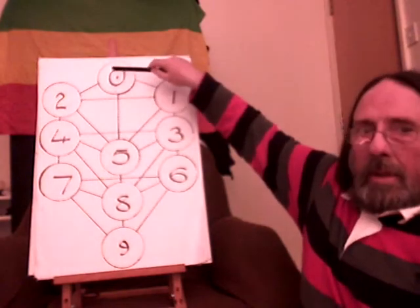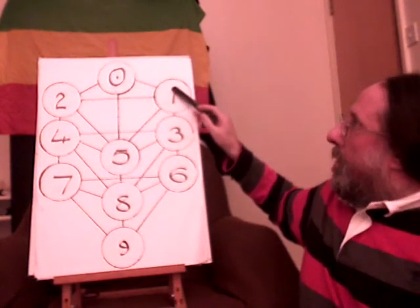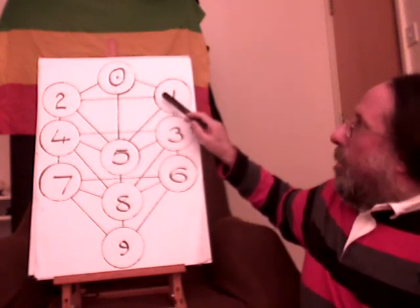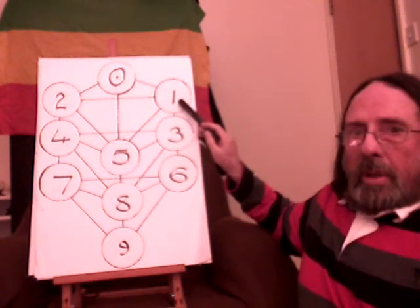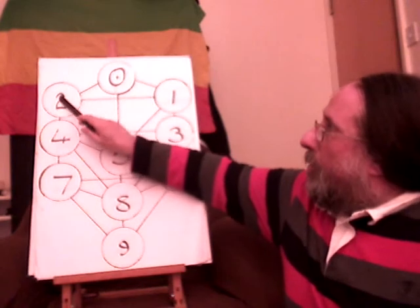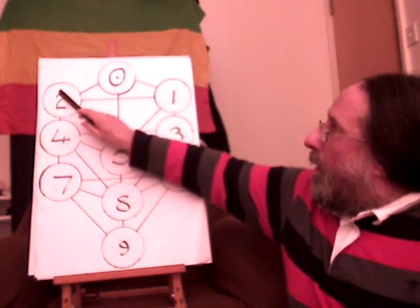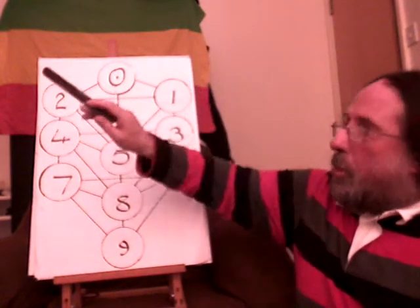Here we have the point, the point, and then the point moves to form the line. And then the line, which is the first dimension. Then the line moves to form the surface, the plane, that's a face, a bust, head and shoulders, the number two.